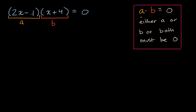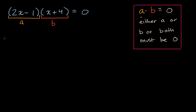So either two x minus one needs to be equal to zero, or x plus four needs to be equal to zero, or both of them need to be equal to zero. So I could write that as: two x minus one is equal to zero, or x plus four is equal to zero.